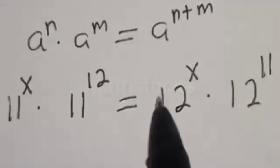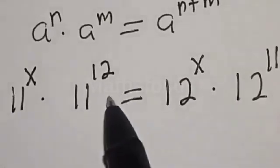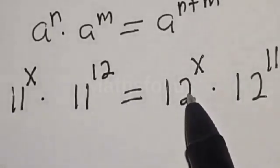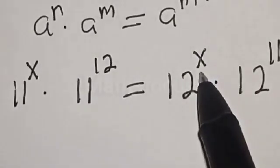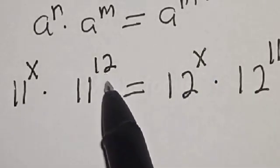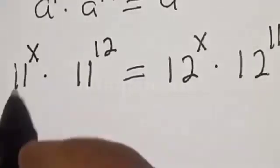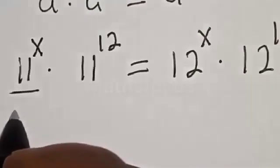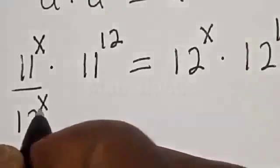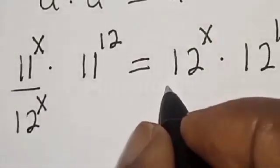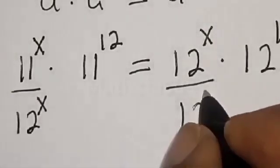Now, looking at the whole equation, we can divide both sides by 12 raised to power s — we have 11 raised to power s on the left and 12 raised to power s on the right. We also have 11 raised to power 12 and 12 raised to power 11. Let's divide both sides by 12 raised to power s and also by 11 raised to power 12.